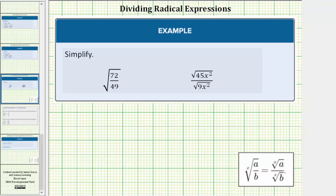So looking at our first example, notice how the fraction does not simplify, and we have the square root of 72 divided by 49. To simplify this, we will use the property shown below, which indicates the square root of a fraction equals the square root of the numerator divided by the square root of the denominator.